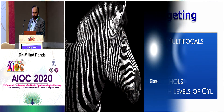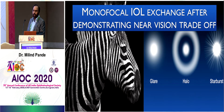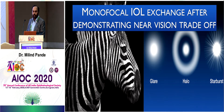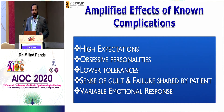Contrast and halos are part and parcel of presbyopia lenses because there is a trade-off, and we expect the neuroadaptation process to improve on these symptoms. Before you actually do an intraocular lens exchange to address insufferable glare, halos, or contrast issues, it's important to talk to patients and show them what they will lose in terms of reading ability. It's quite amazing how many patients at that stage feel it's not worth it.